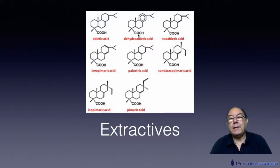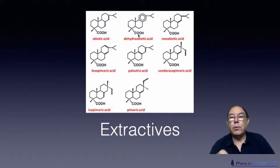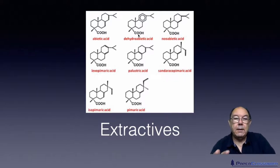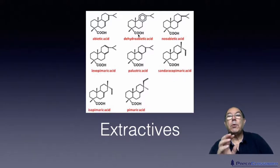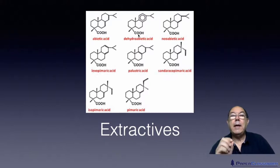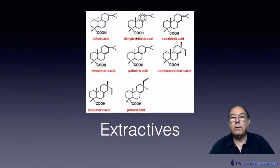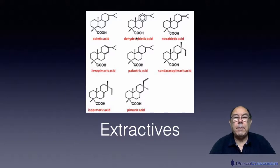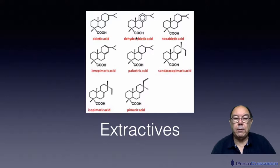The classic example of this is cationic starch. Normal starch has absolutely no affinity for cellulose. But as soon as you chemically modify that starch to give it a positive charge, it will be attracted to these negative fibre surfaces. We'll do that in a bit more detail in a future video, so don't worry about it for now.